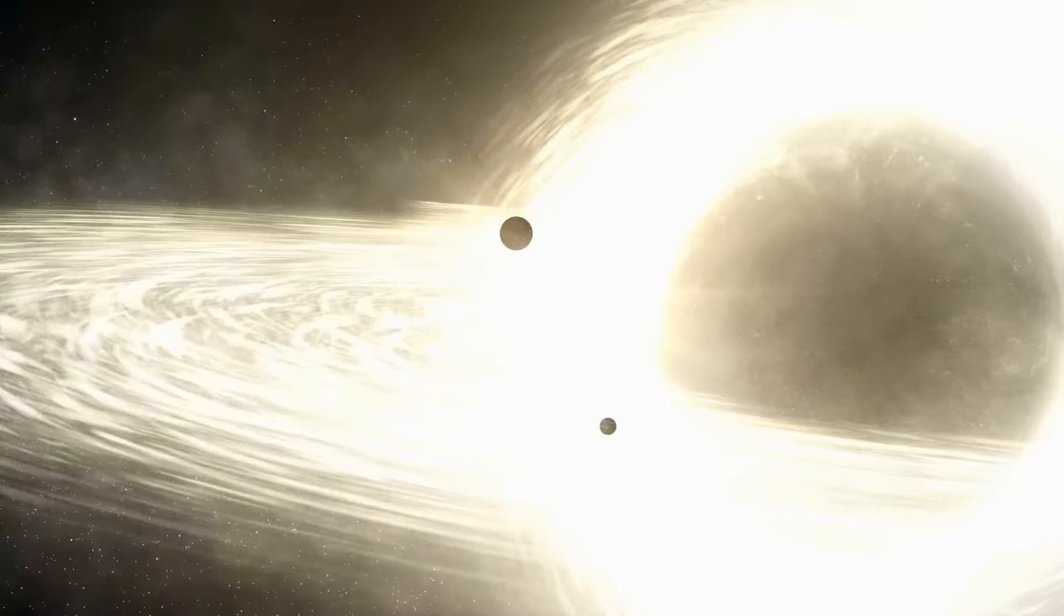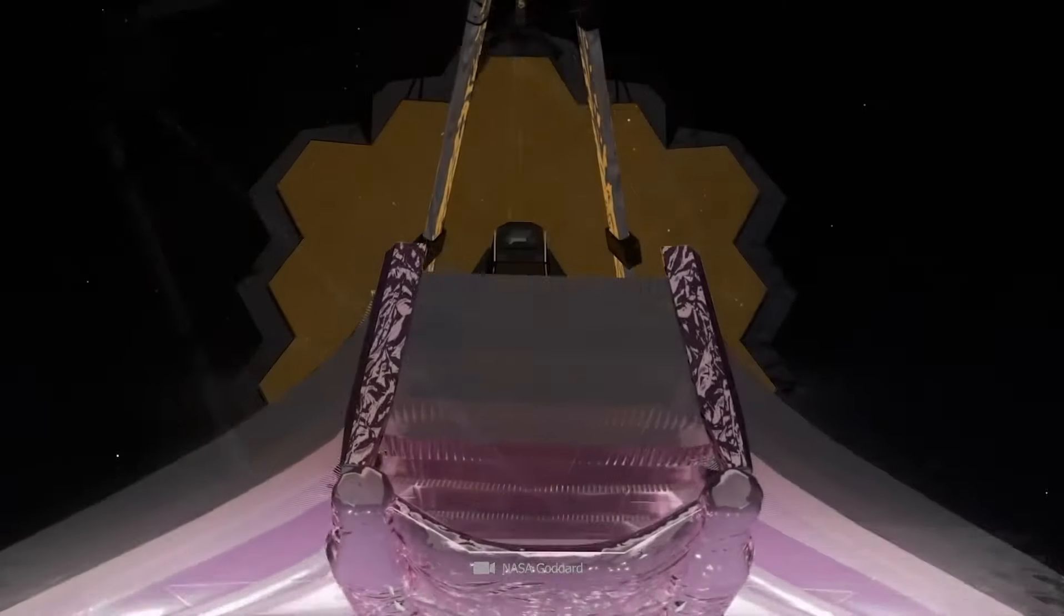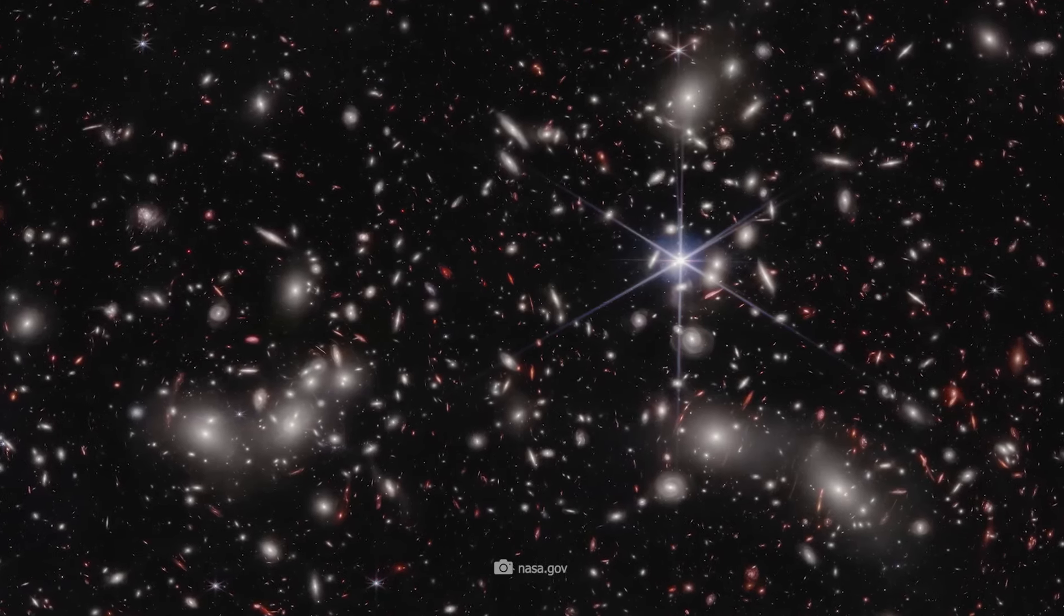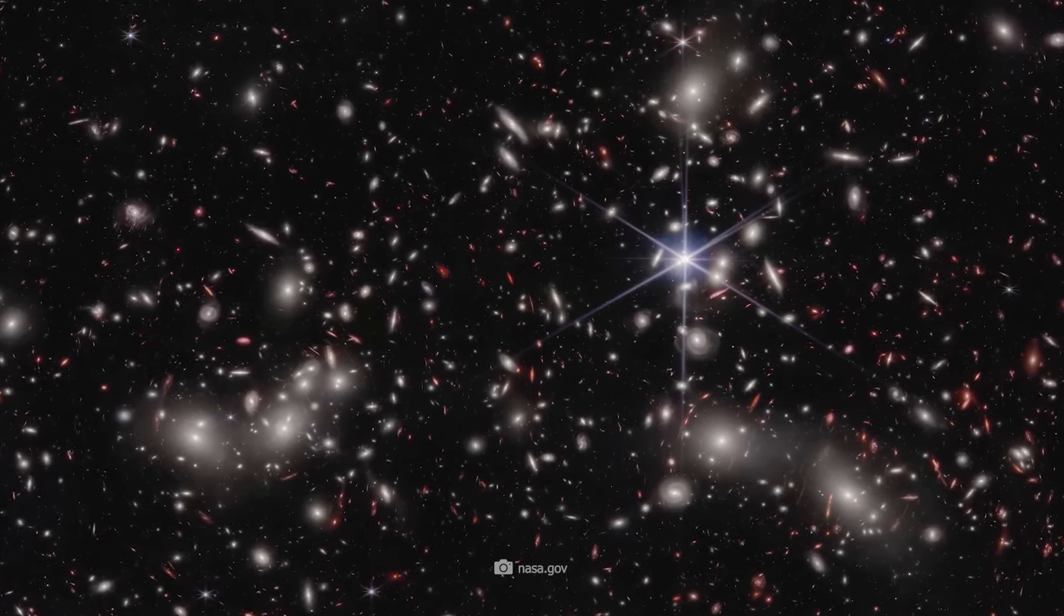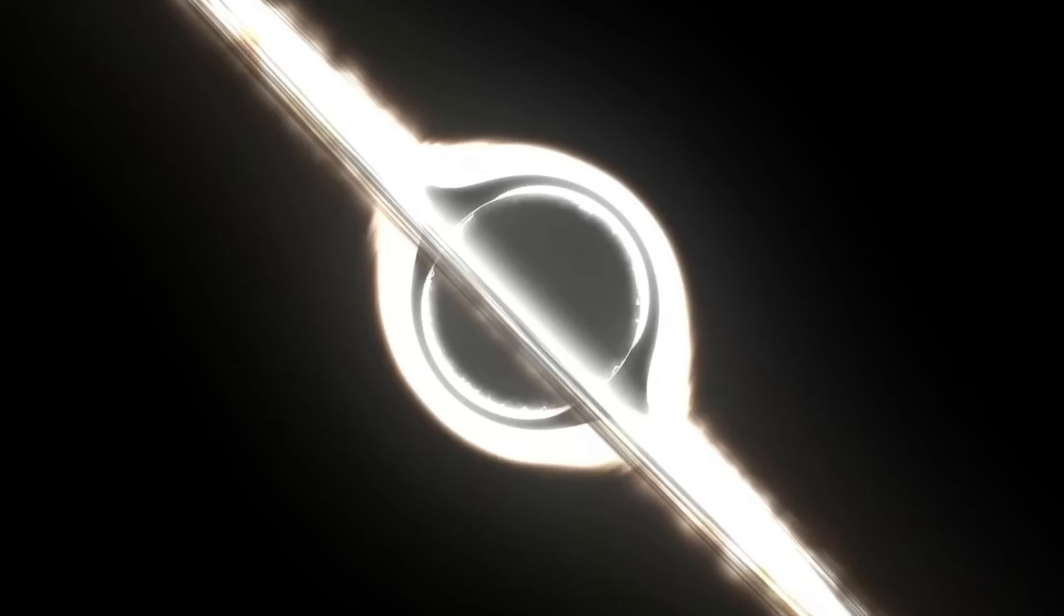How did JWST detect the black hole? The black hole and the galaxy that host it are very far away from us, more than 13 billion light years away. This means that the light we see from them today was emitted more than 13 billion years ago when the universe was only 400 million years old.